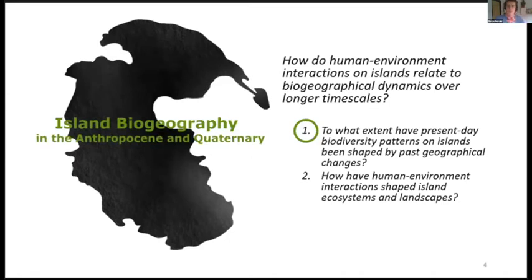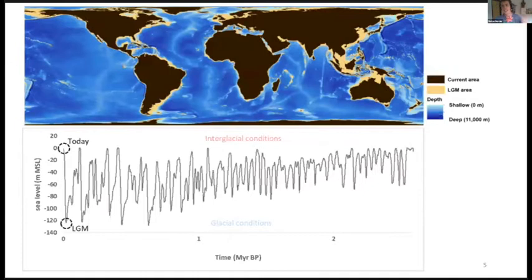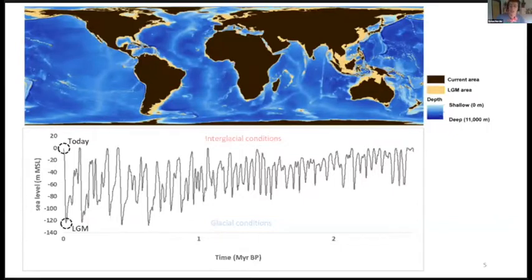He will mainly focus on the extent to which present-day biodiversity patterns on islands have been shaped by past geographical dynamics. As Max's talk showed, the Earth is really dynamic: only 20,000 years ago during the last glacial maximum, you could walk from Tasmania to New Guinea, or from the Netherlands to Ireland. The world looked very different — islands were much larger, continents were much larger, and many islands were much better connected. Research has focused on this period as relevant to shaping current species distributions.